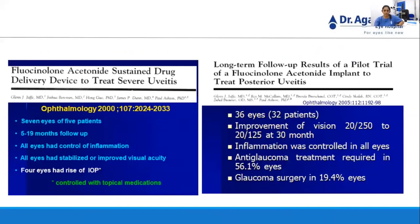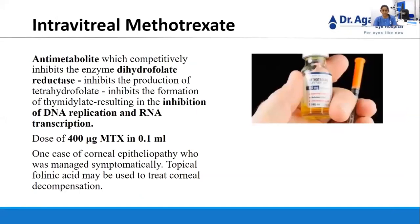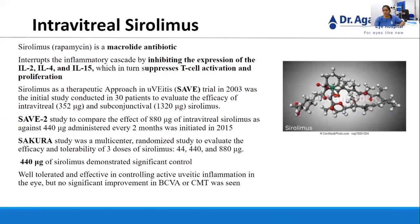Coming to intravitreal immunosuppressants: intravitreal methotrexate is an antimetabolite that competitively inhibits the enzyme dihydrofolate reductase, also inhibiting tetrahydrofolate production, thus inhibiting thymidylate synthesis and resulting in inhibition of DNA replication and RNA transcription. It can be injected in a dose of 400 micrograms in 0.1ml. One case of corneal epitheliopathy has been reported; topical folinic acid can be used to treat corneal decompensation. Intravitreal sirolimus (rapamycin) is a macrolide antibiotic that interrupts the inflammatory cascade by inhibiting expression of interleukin-2, -4, and -15, suppressing T-cell activation and proliferation.